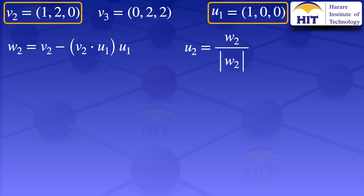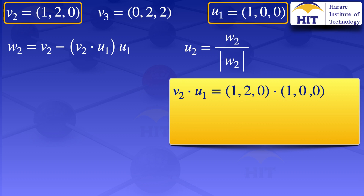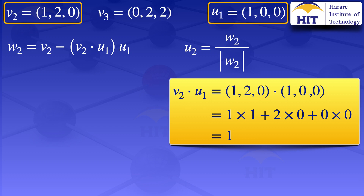To evaluate W2, we calculate the inner product of V2 and U1. That inner product equals (1, 2, 0)·(1, 0, 0) = 1·1 + 2·0 + 0·0 = 1. Substituting that into the formula for W2, we get V2 minus 1·U1, which is V2 minus U1. So W2 = (1, 2, 0) minus (1, 0, 0) = (0, 2, 0).